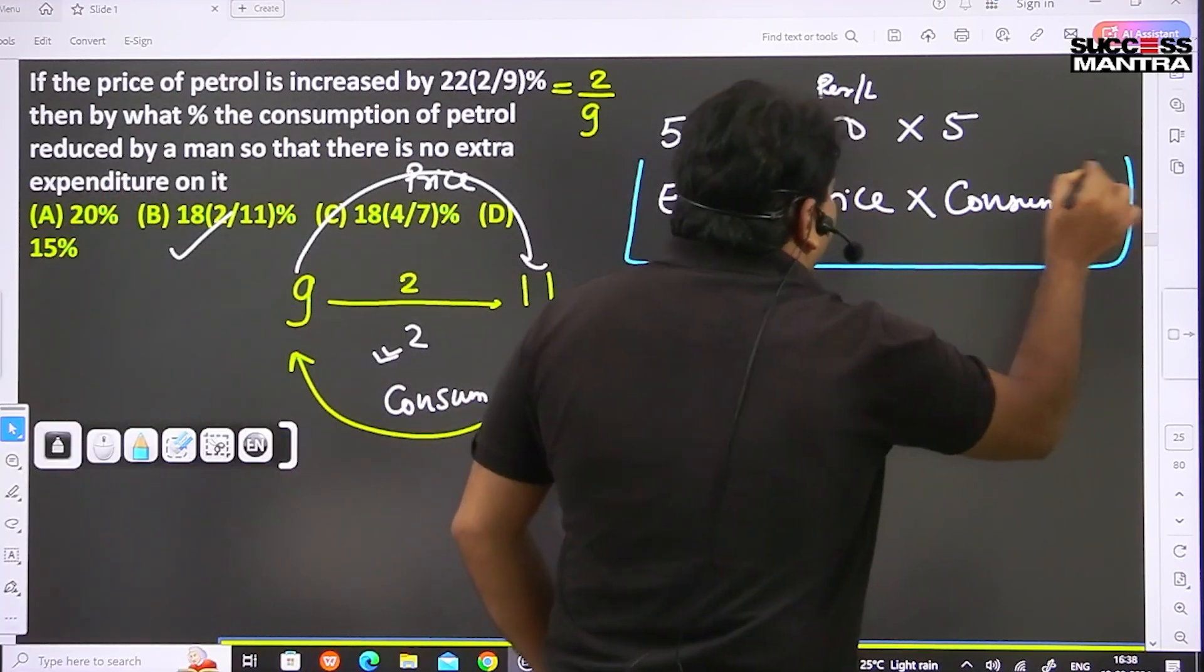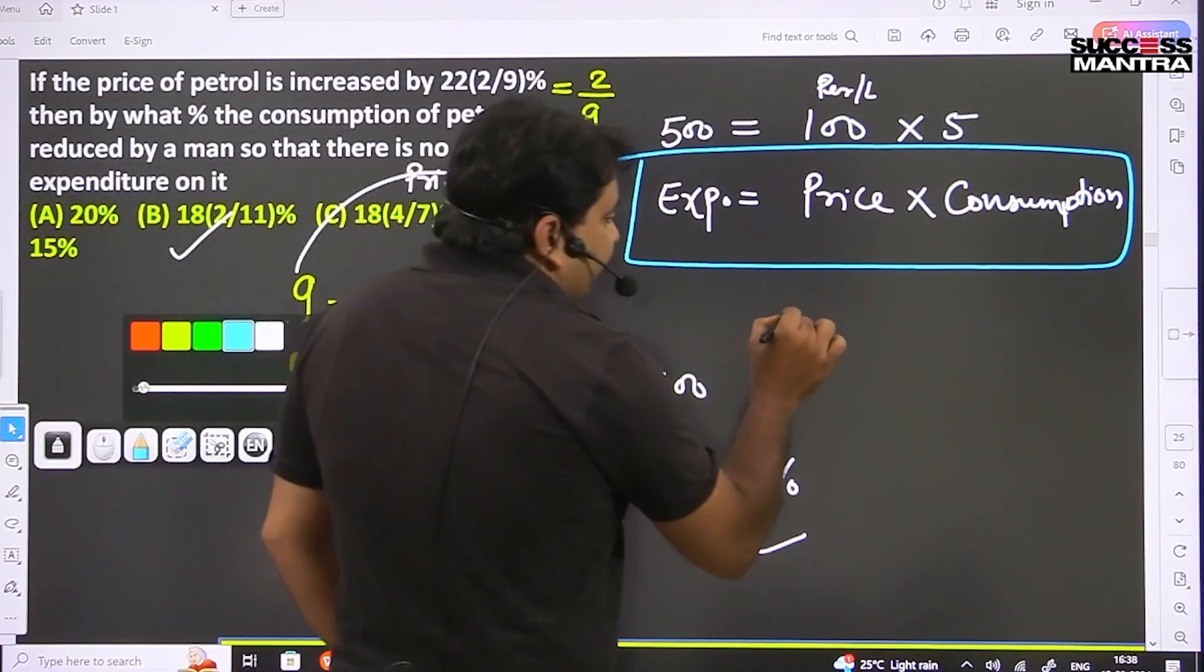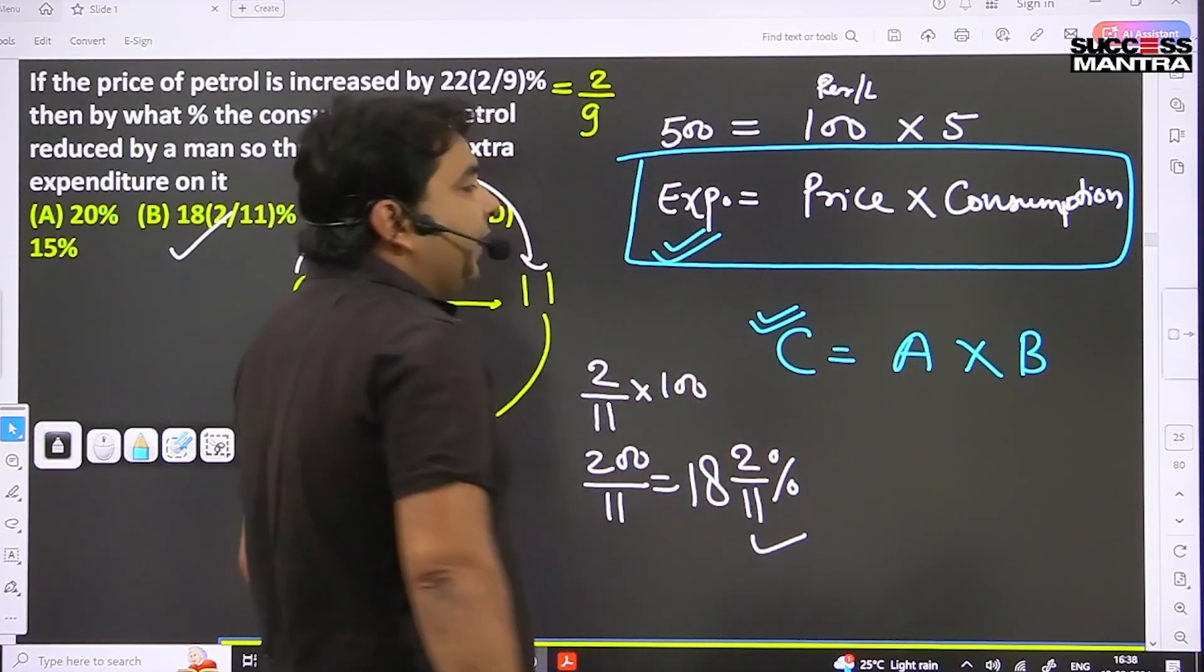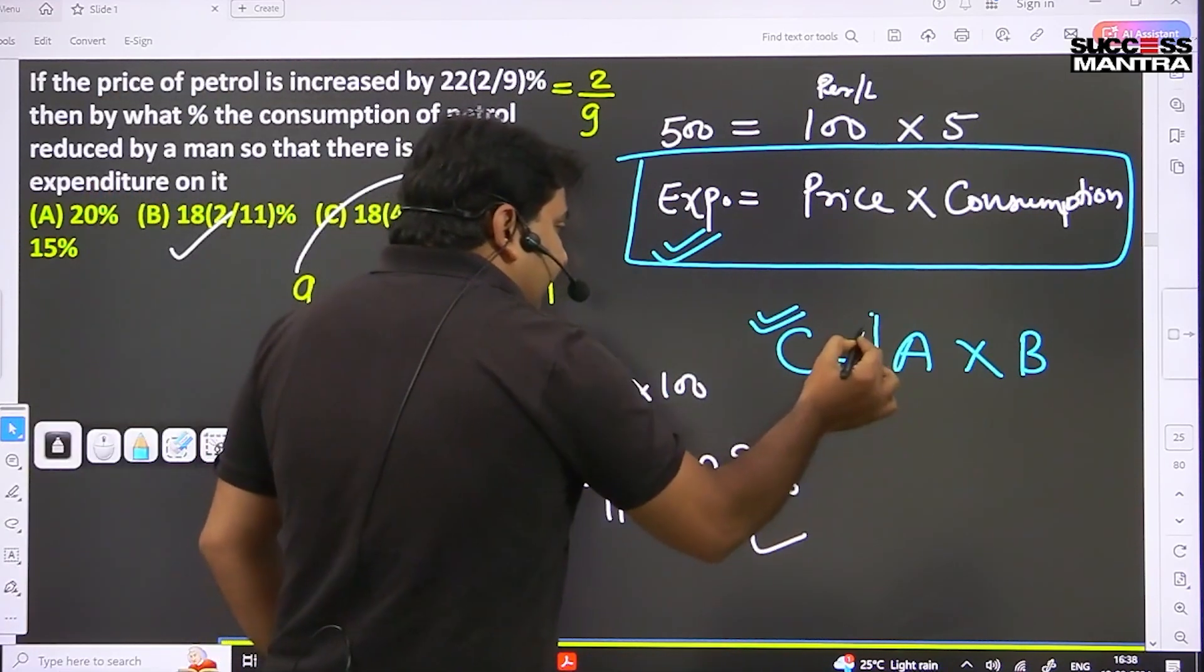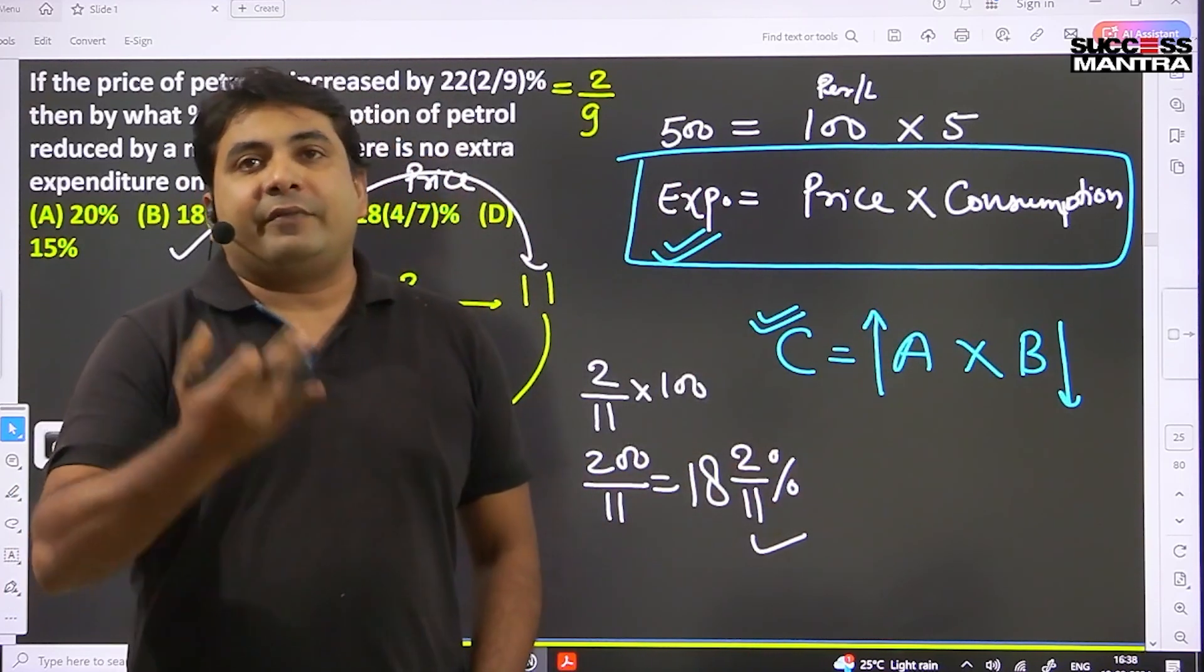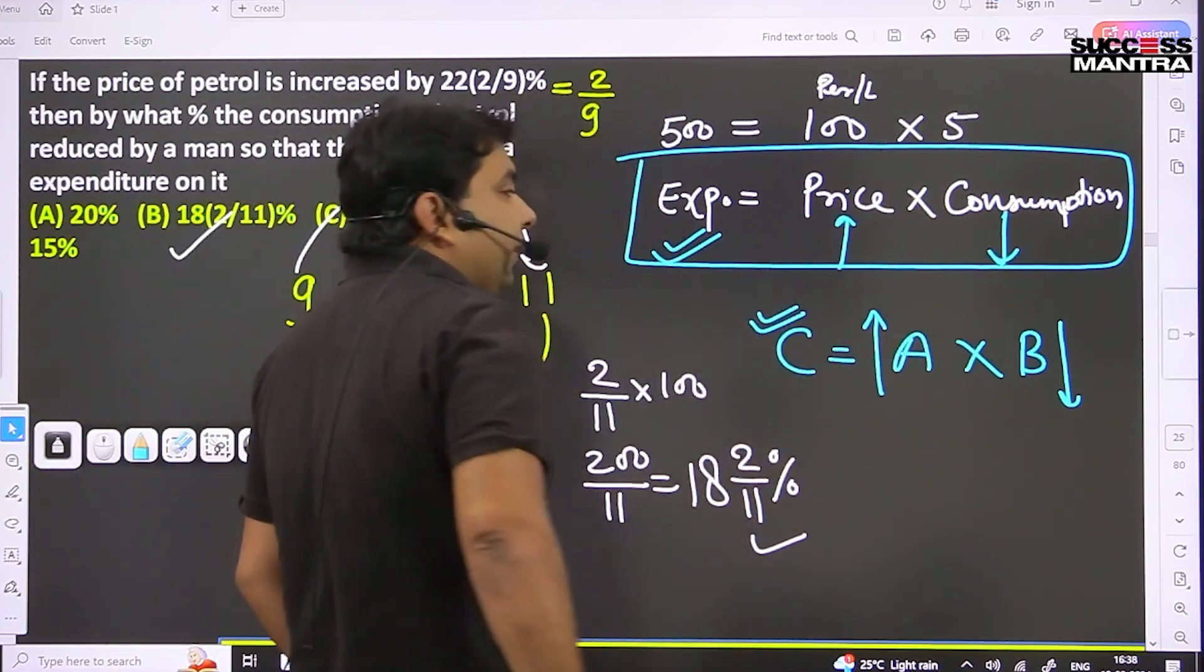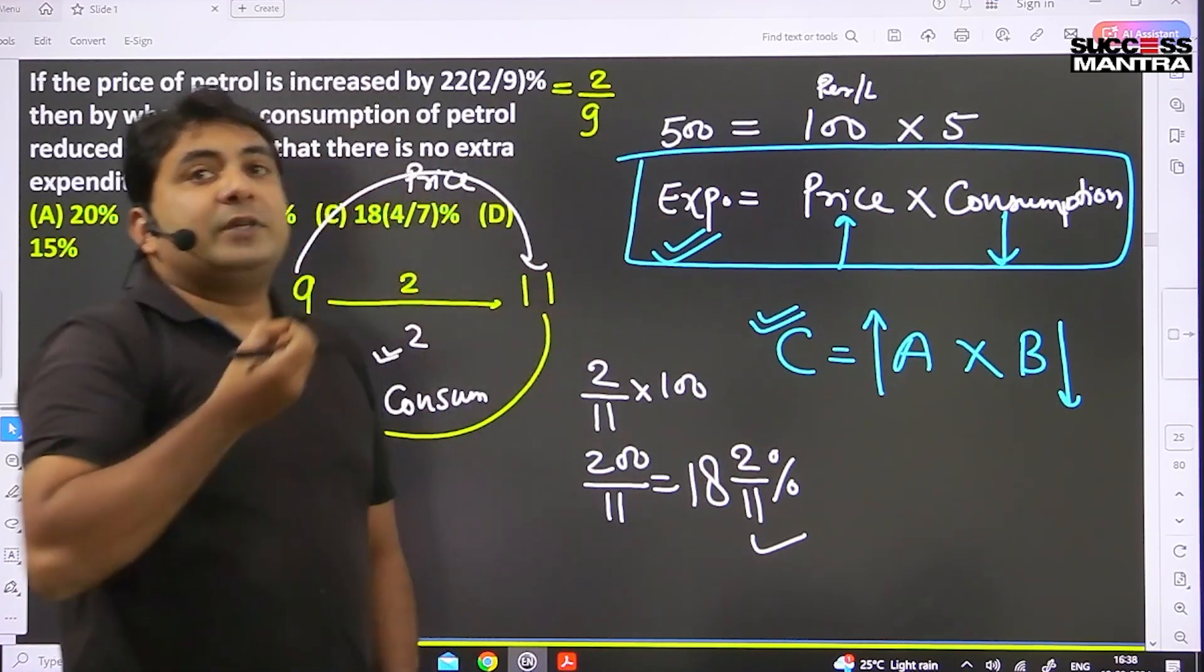Now, price times consumption - you can see that C equals A cross B. If you want your C to remain maintained, or your expenditure to remain maintained, then if one increases, definitely the other should decrease. If you want to increase, then in the opposite direction of consumption, there should be a decrease.